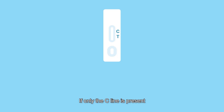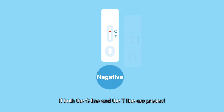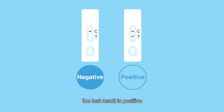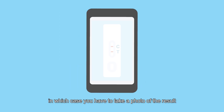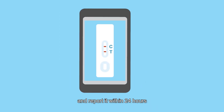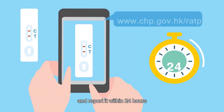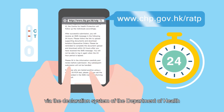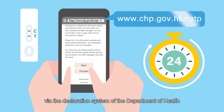If only the C-line is present, the test result is negative. If both the C-line and the T-line are present, the test result is positive. In which case, you have to take a photo of the result and report it within 24 hours via the declaration system of the Department of Health.